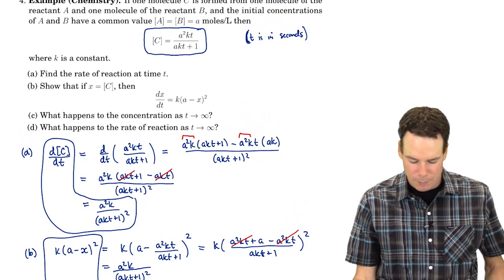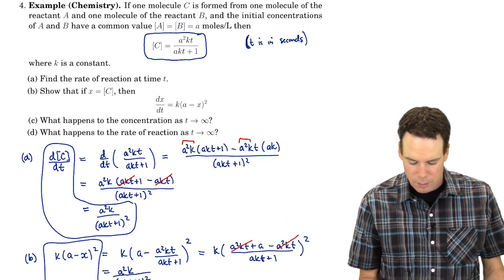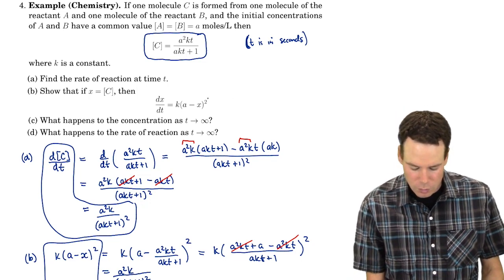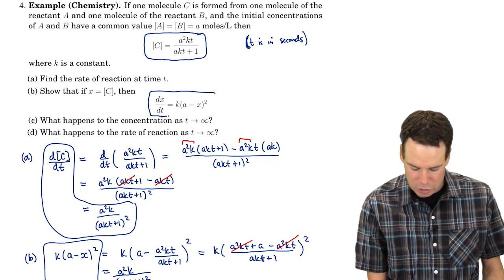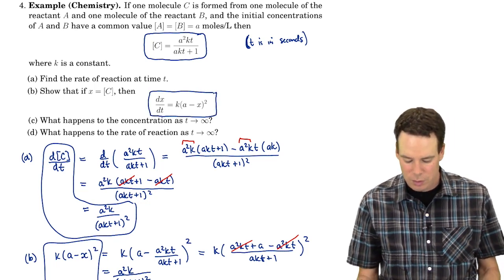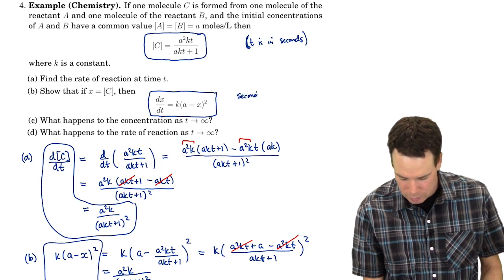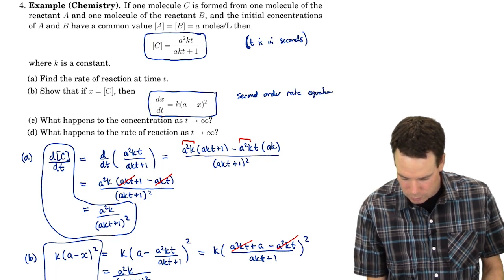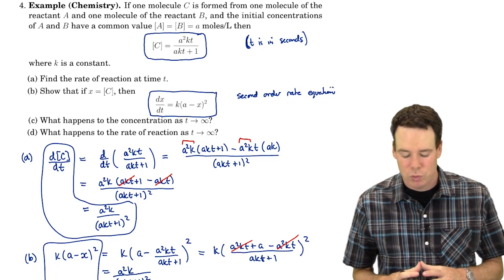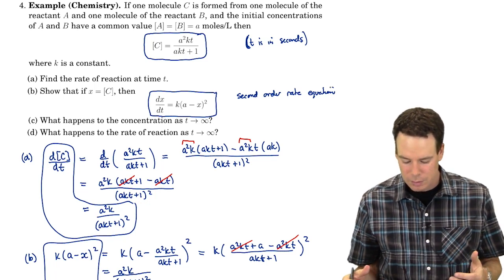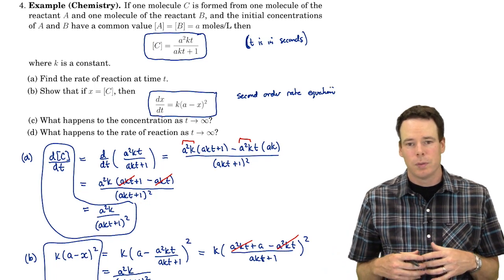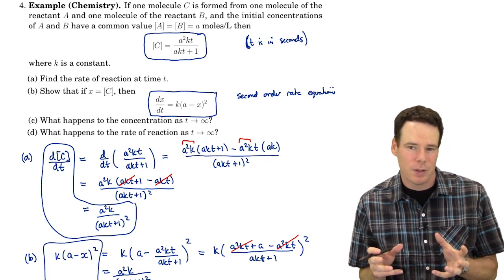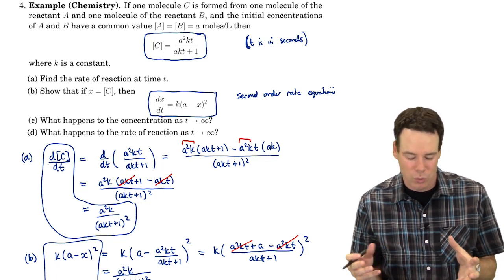Now I just want to bring up a point here. In chemistry, if you've taken a chemistry course before or are currently taking one now, you probably will have seen an equation like this. This is a differential equation appearing in your textbook. This is known as a second order rate equation.